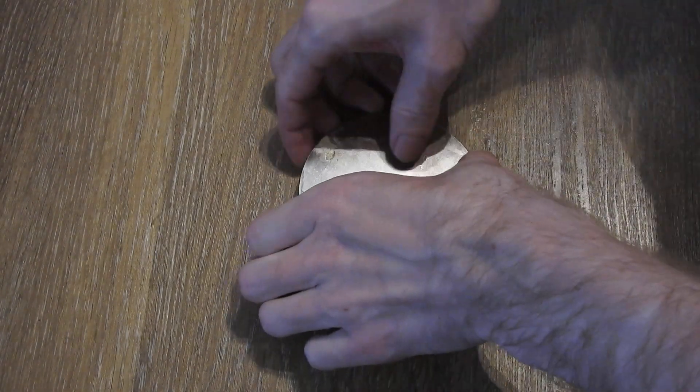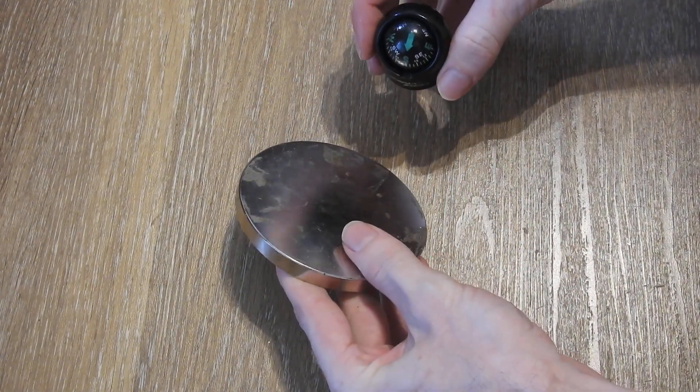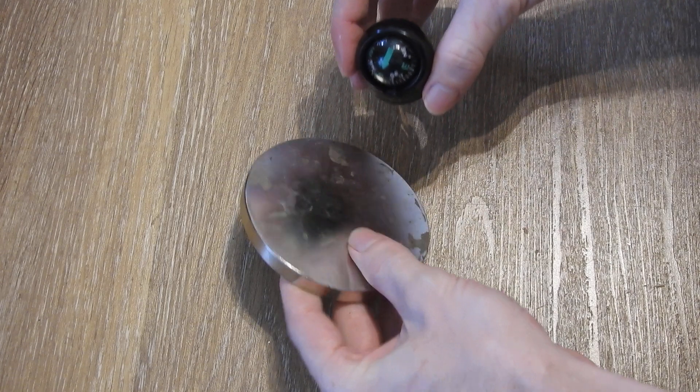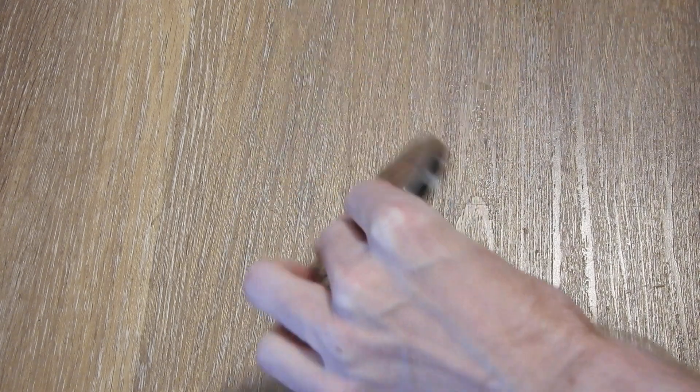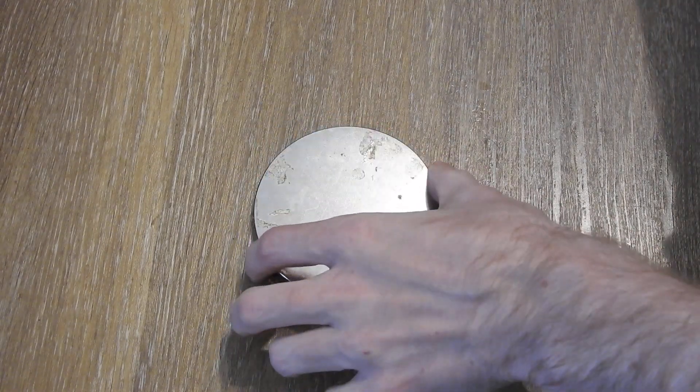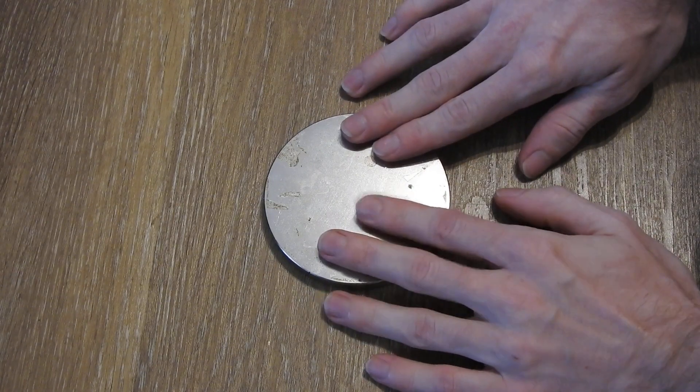First off let me check the polarity of it. We have south pole on this side and of course north pole on the other side. This is just a compass. So I will lay it like this with south pole on the top side.